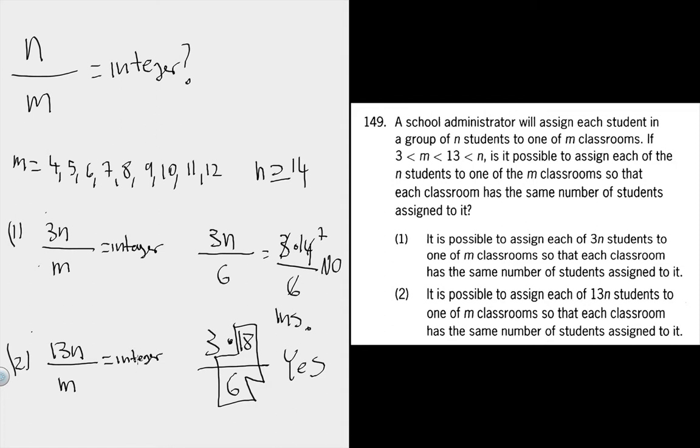The difference is that m is never going to be a factor of 13 because m is between 3 and 13. None of those numbers, 4 through 12, go evenly into 13.